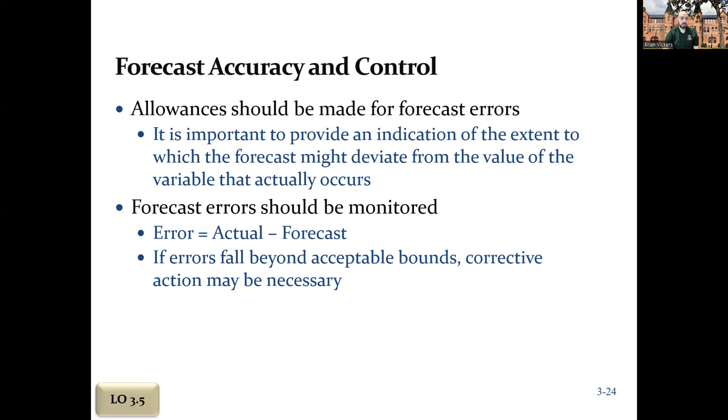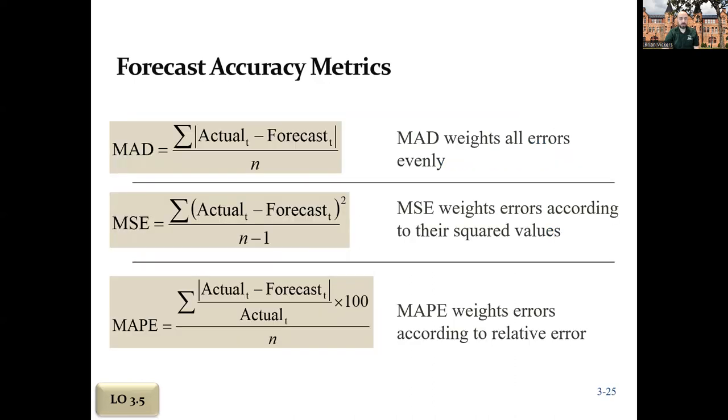When we monitor it, we typically take the value and turn it into the absolute value, meaning if it's negative, we convert it to positive. If the actual was 40 and your forecast was 45, then you're at negative 5. But what we're more interested in is the difference, and the difference is 5. That's all that really matters for forecasting - we were off by 5.